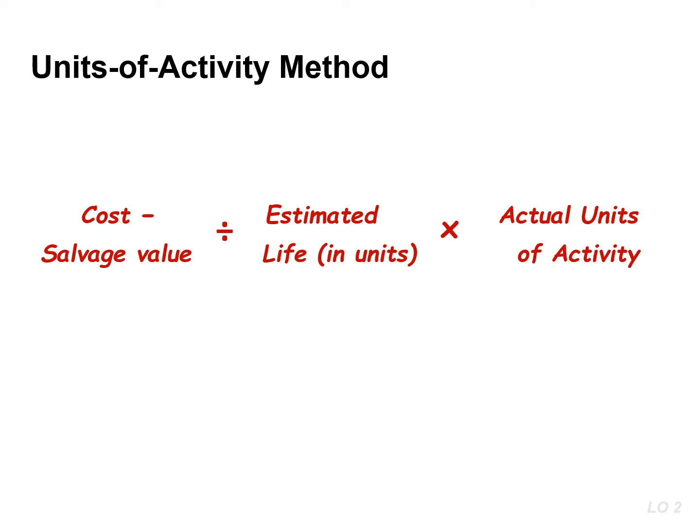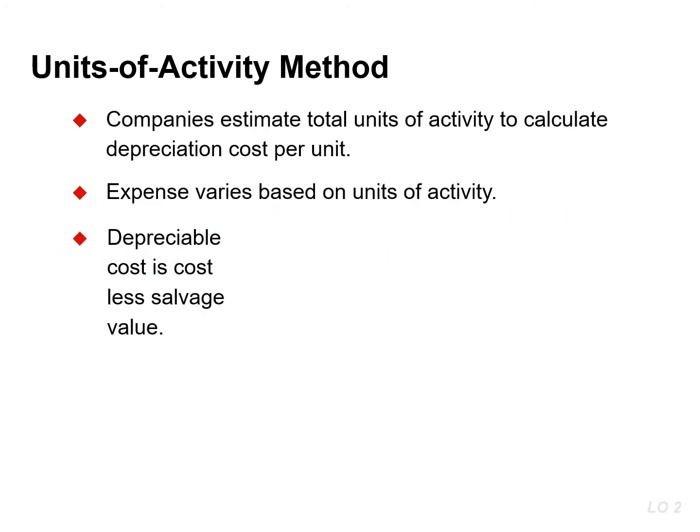Calculating depreciation under the units of activity method is similar to straight line. The only difference is that the life is expressed in terms of an activity rather than years. Under this method, a company estimates the total units of activity for the entire useful life and divides that amount into the depreciable cost to determine the depreciation cost per unit. It then multiplies the depreciation cost per unit by the units of activity during the year to find the annual depreciation expense.